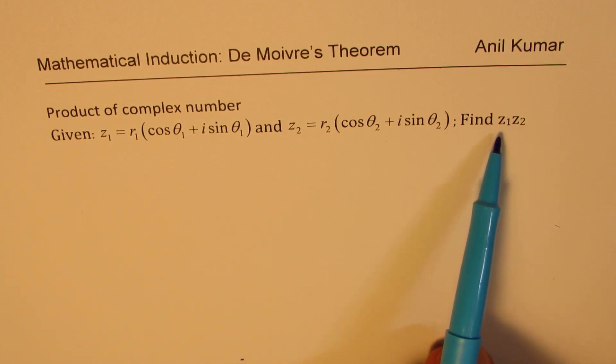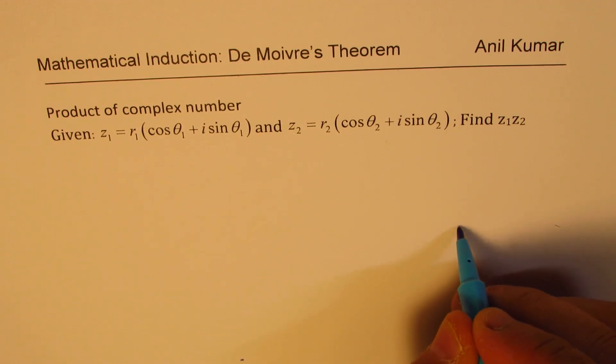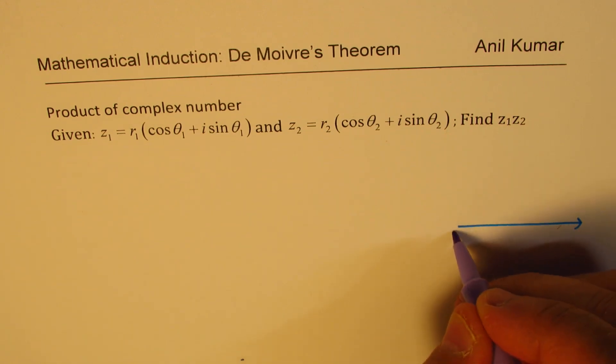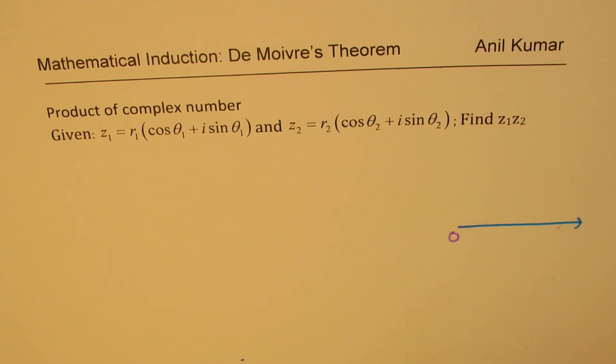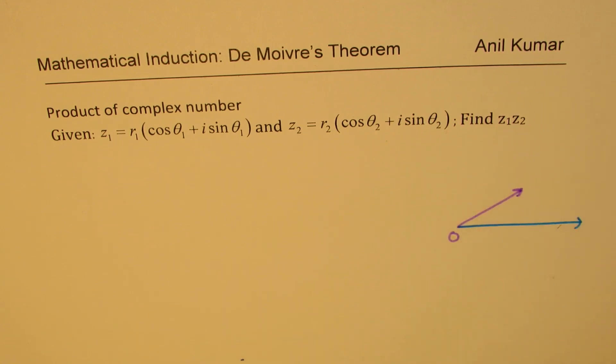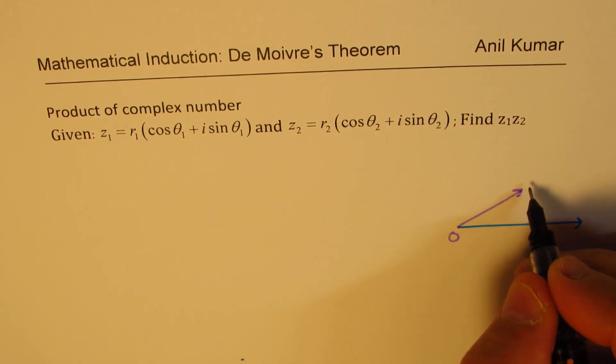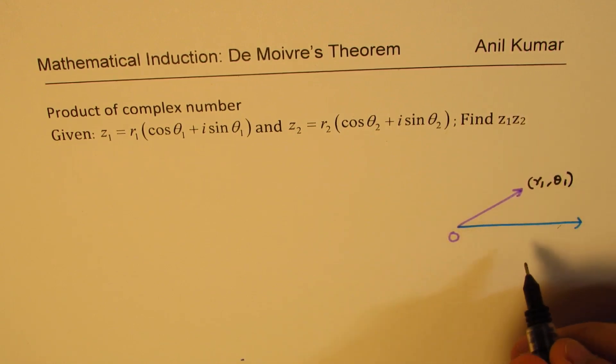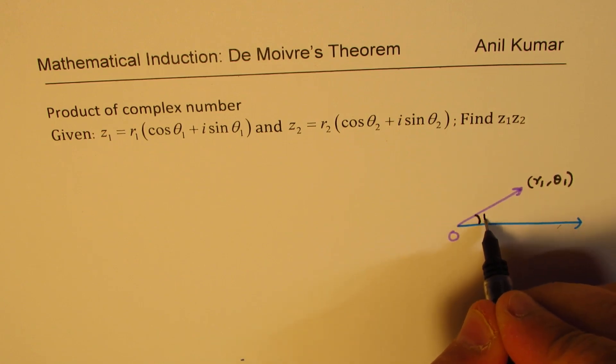We need to find the product z1 times z2. Geometrically I could represent these complex numbers with the pole at O. Let us say z1 is this complex number with r1 as the absolute value and theta1 as its argument.